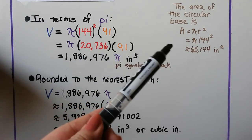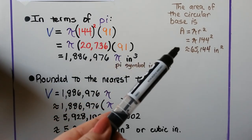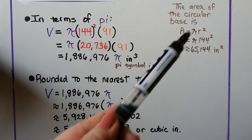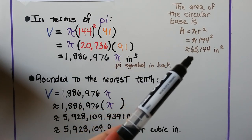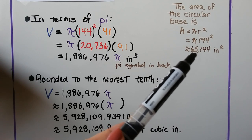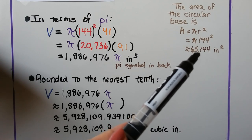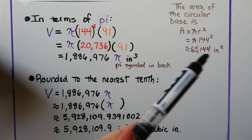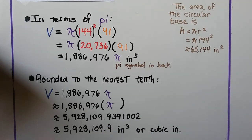We can also find the area of the circular base as pi r squared. The base area would be 65,144 square inches.